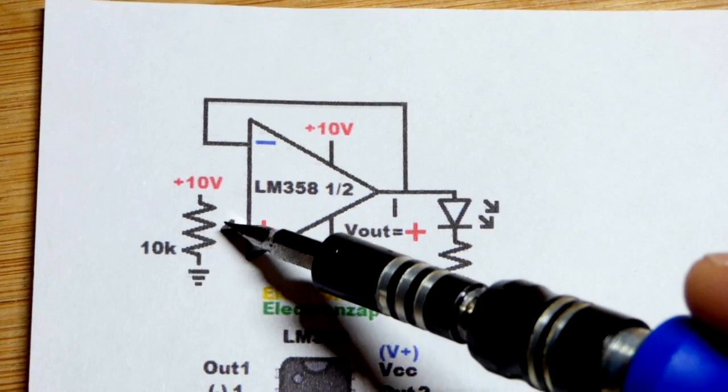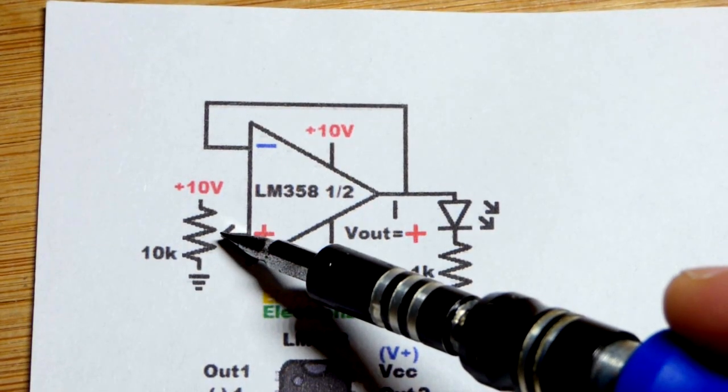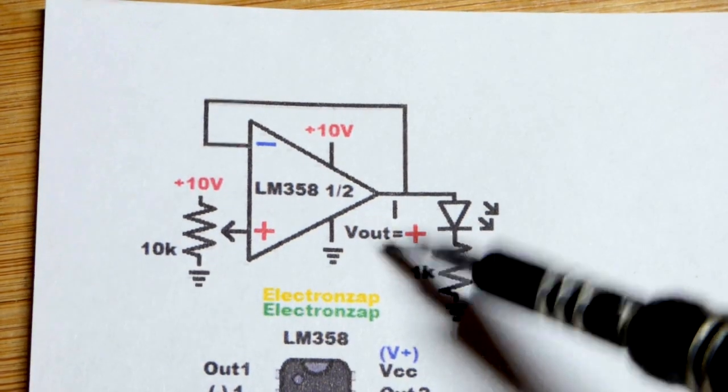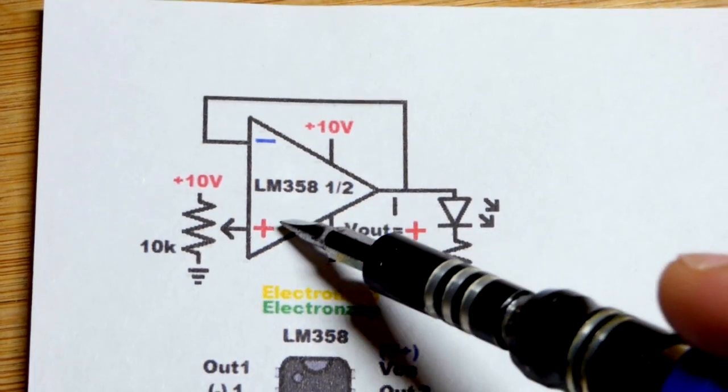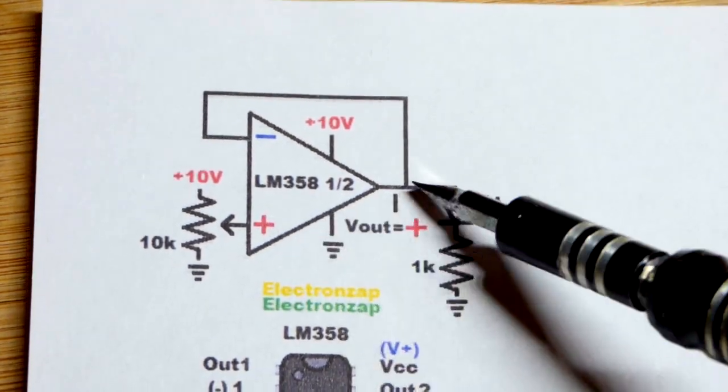It will be wherever the dial is turned. And so in any case, the way the circuit is wired up, the voltage at the output here is the same as the voltage we set at the non-inverting input.